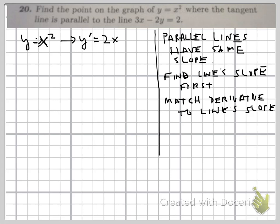We actually have to do some rearranging of the line. We have 3x minus 2y equals 2. If we do negative 2y equals negative 3x plus 2, and divide everything by negative 2, then we get y equals 3 over 2x. Plus 2 divided by negative 2, so that becomes minus 1.